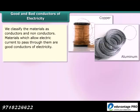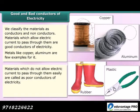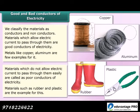We classify materials as conductors and non-conductors. Materials which allow electric current to pass through them are good conductors of electricity — metals like copper and aluminium are a few examples. Materials which do not allow electric current to pass through them easily are called poor conductors of electricity; rubber and plastic are examples. We use a tester to test the conductivity of materials which are in solid state.